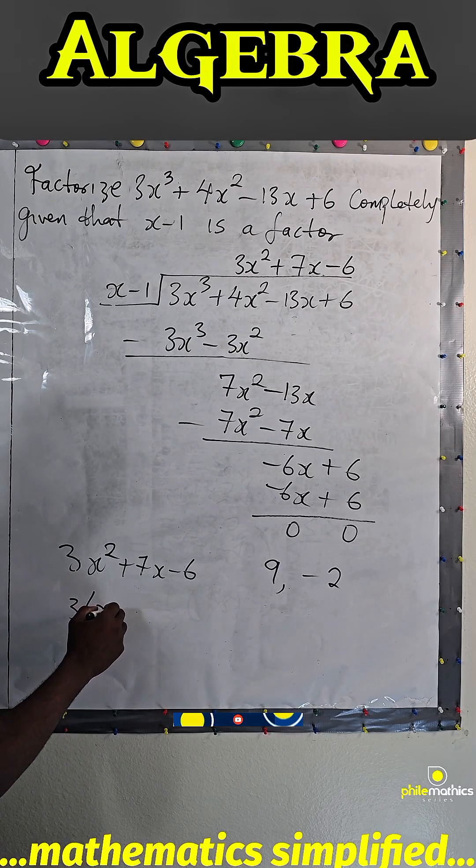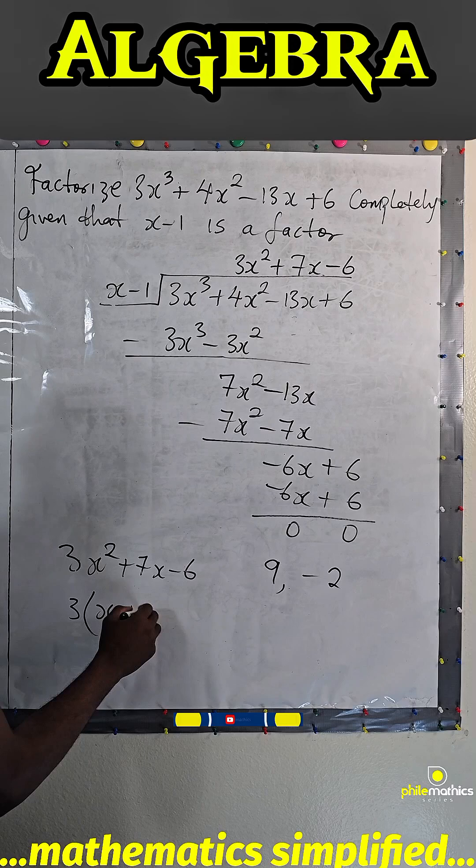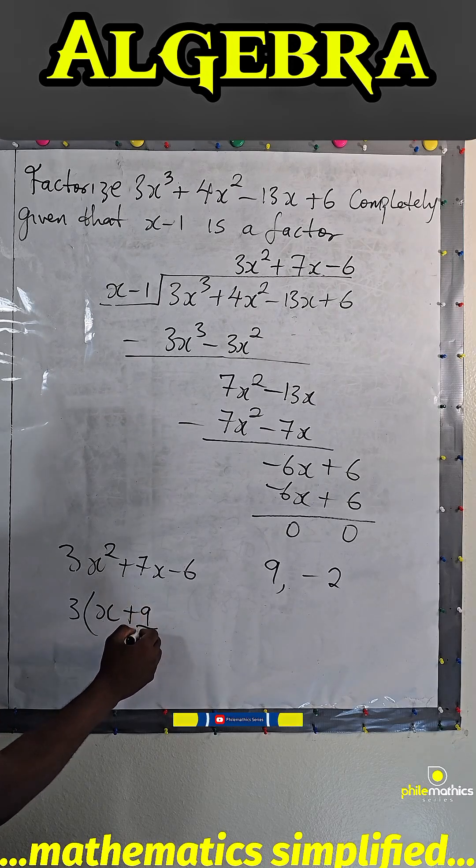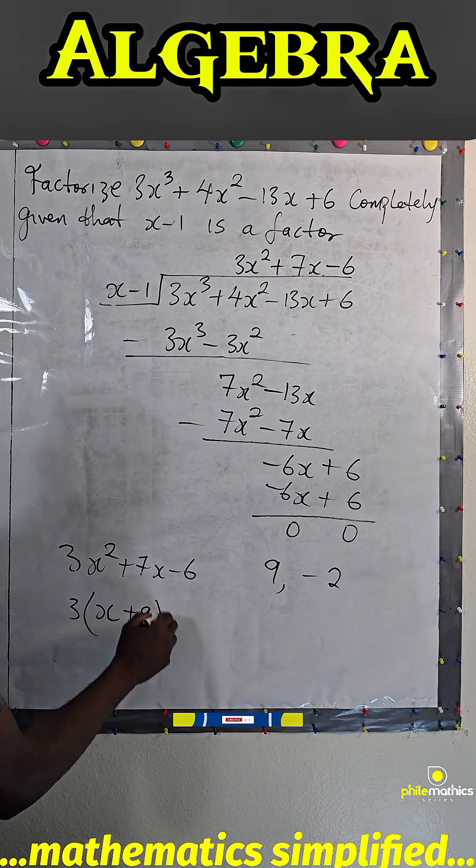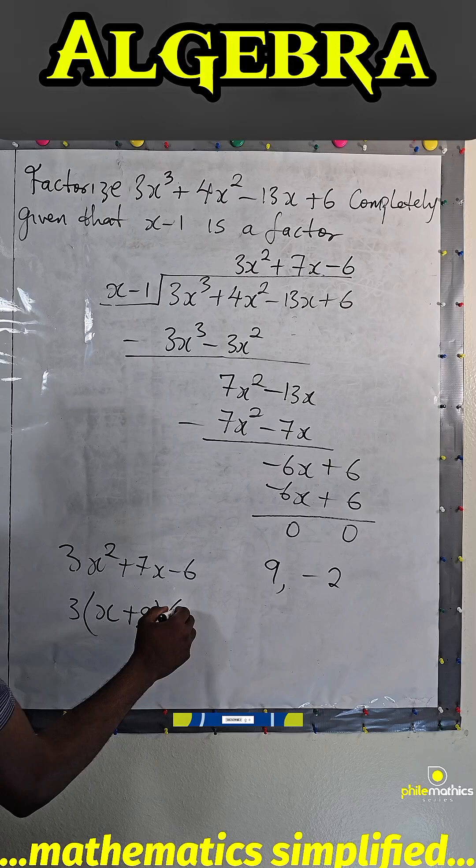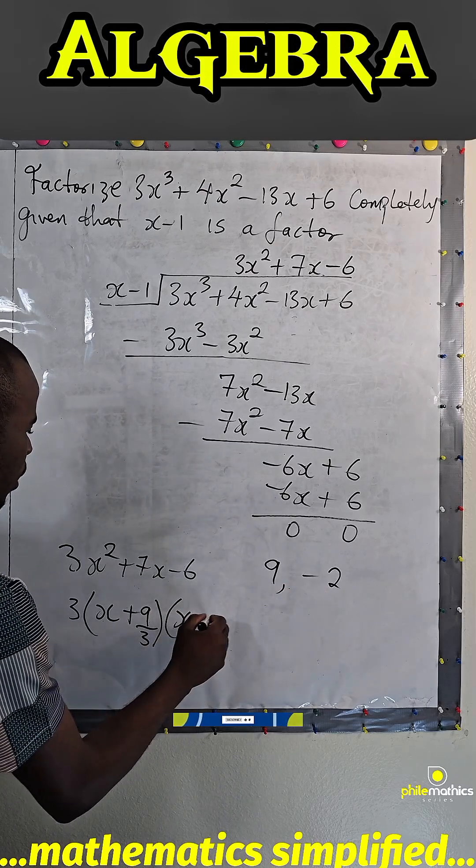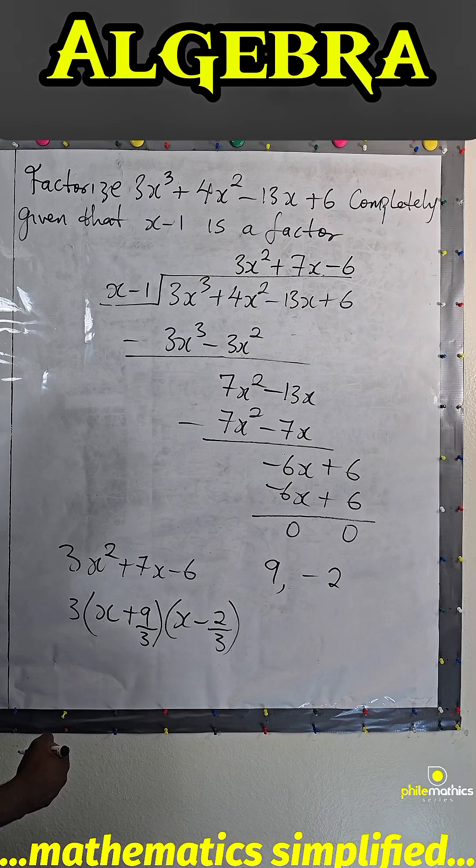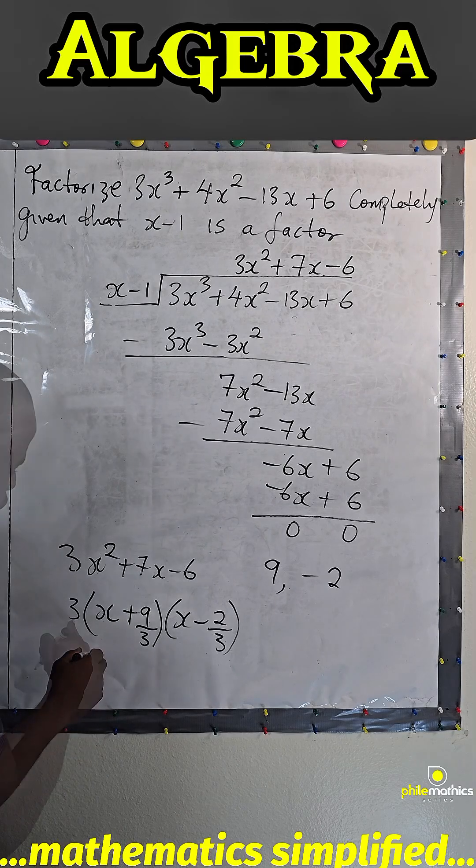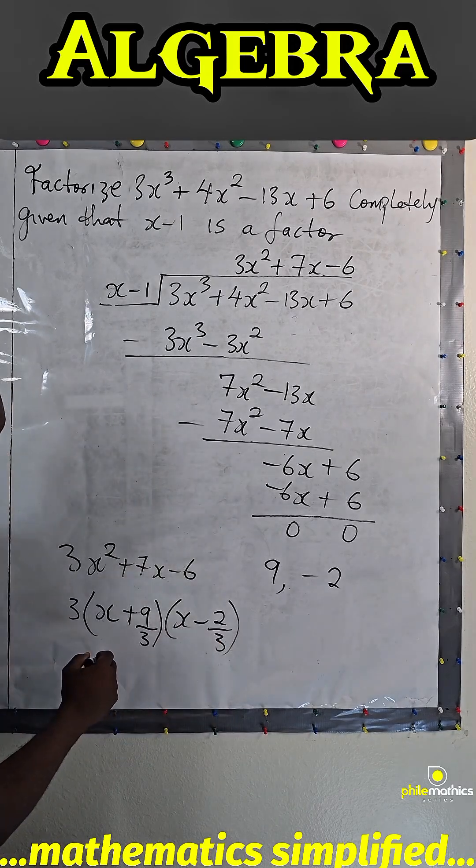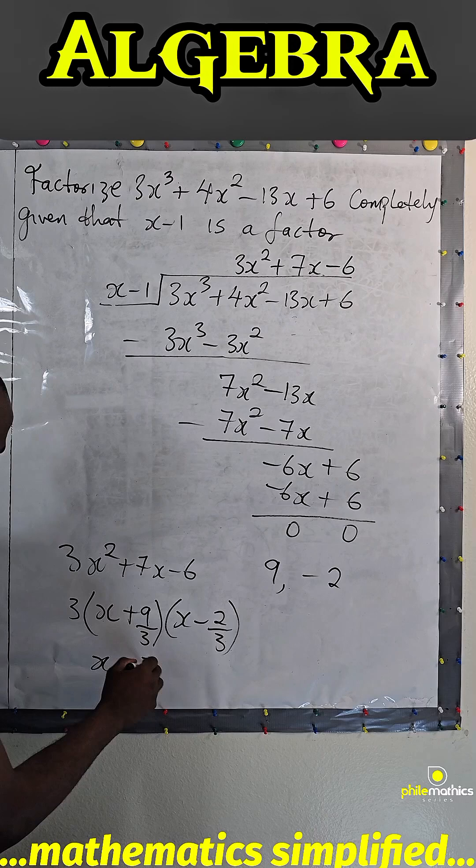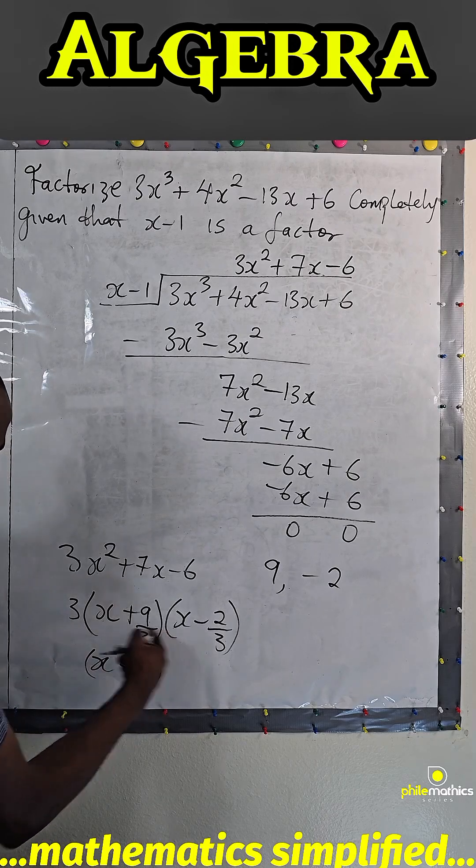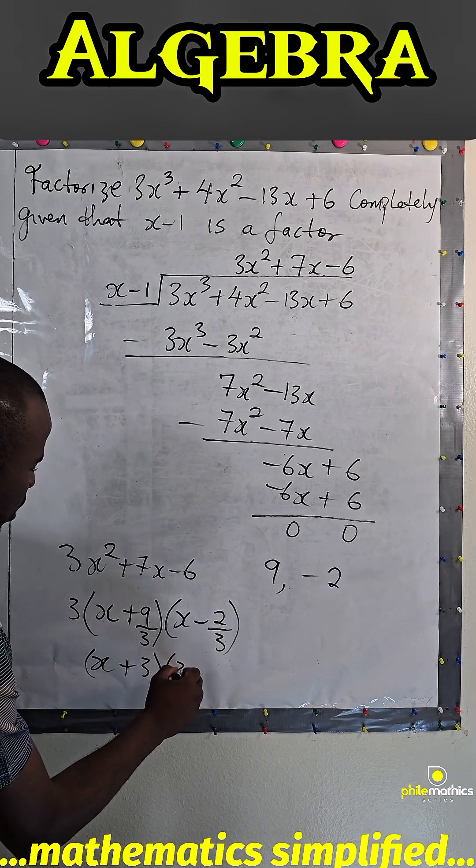9 over 3 is 3. If I multiply this by 3 I will have x plus 3. This will be 3x minus 2.